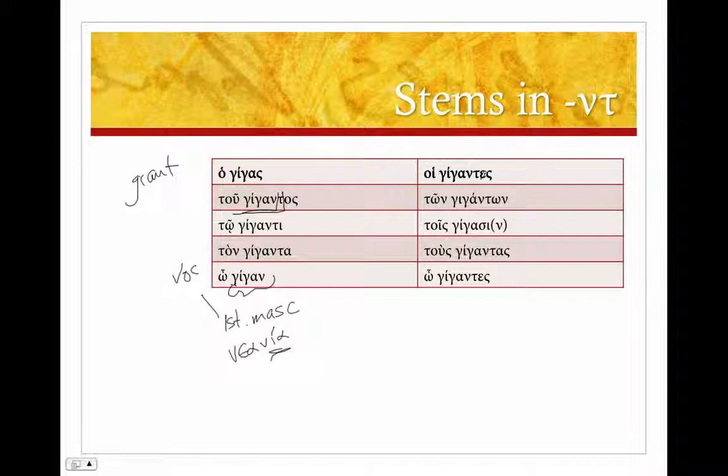And then in the plural, hoi gigantes. Ton giganton. Perfectly normal in our nominative and genitive plural. But then what happens here in the dative, our dative plural, tois gigasim. And you'll notice the nu and tau has completely dropped out altogether.